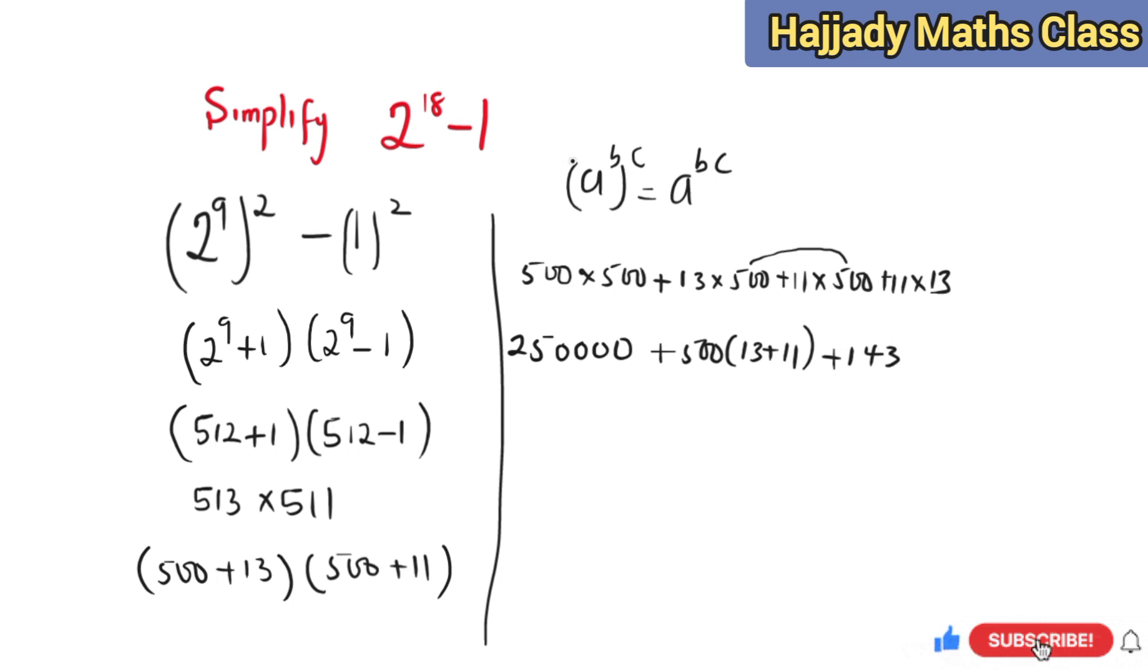So here then we have 250,000 plus 500 multiplied by 24, plus 143.